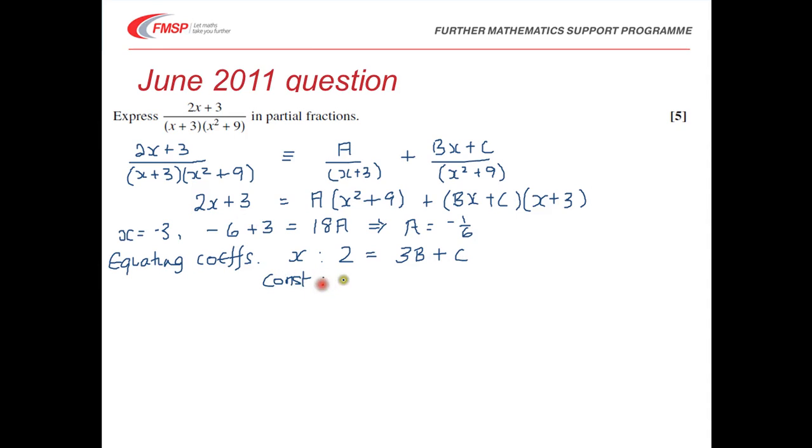And if we look at the constant term, on the left we have a 3, and on the right we'll have 9A and 3C. So we now have two equations, but we already know that A was equal to -1/6, so I'm going to substitute A = -1/6 into that equation, and that means we'll end up with 3 = -9/6, which is -3/2, plus 3C, and if we solve that we'll get C = 3/2.